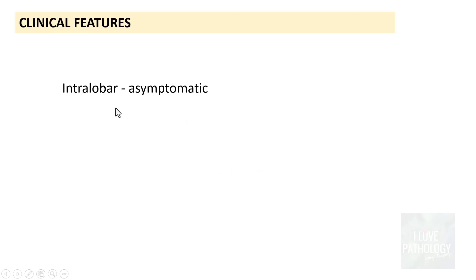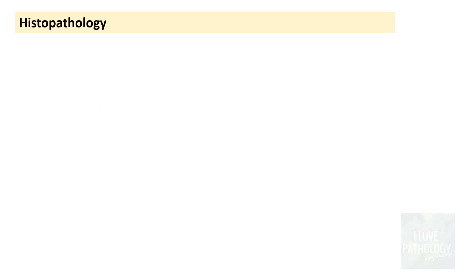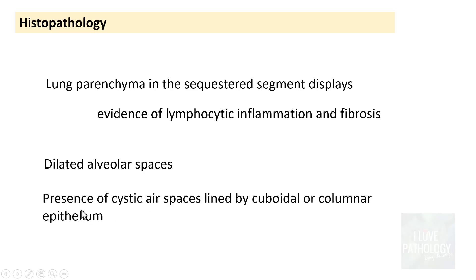Intralobar sequestrations are most often asymptomatic, while extralobar sequestrations are symptomatic, manifesting in early infancy with respiratory distress, congenital heart failure, or even pulmonary hemorrhage. Histopathologically, though this is lung tissue, it is dysplastic — showing lymphocytic infiltration, fibrosis, dilated alveolar spaces, and cystic air spaces lined by cuboidal or columnar epithelium, which identifies it as dysplastic lung parenchyma consistent with sequestration.